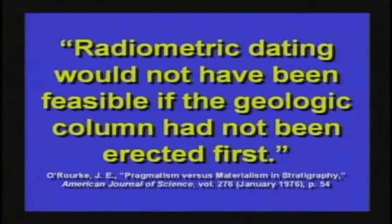That's the logic that scientists will have: we know the geologic column is established, therefore any carbon dates we get should match that. If they don't, we'll throw them out and keep testing until we do. They might have to test a sample five or six times until they get the number they want. If you get a different number every time, how would you know any of them are right? Radiometric dating would not have been feasible if the geologic column had not been erected first.